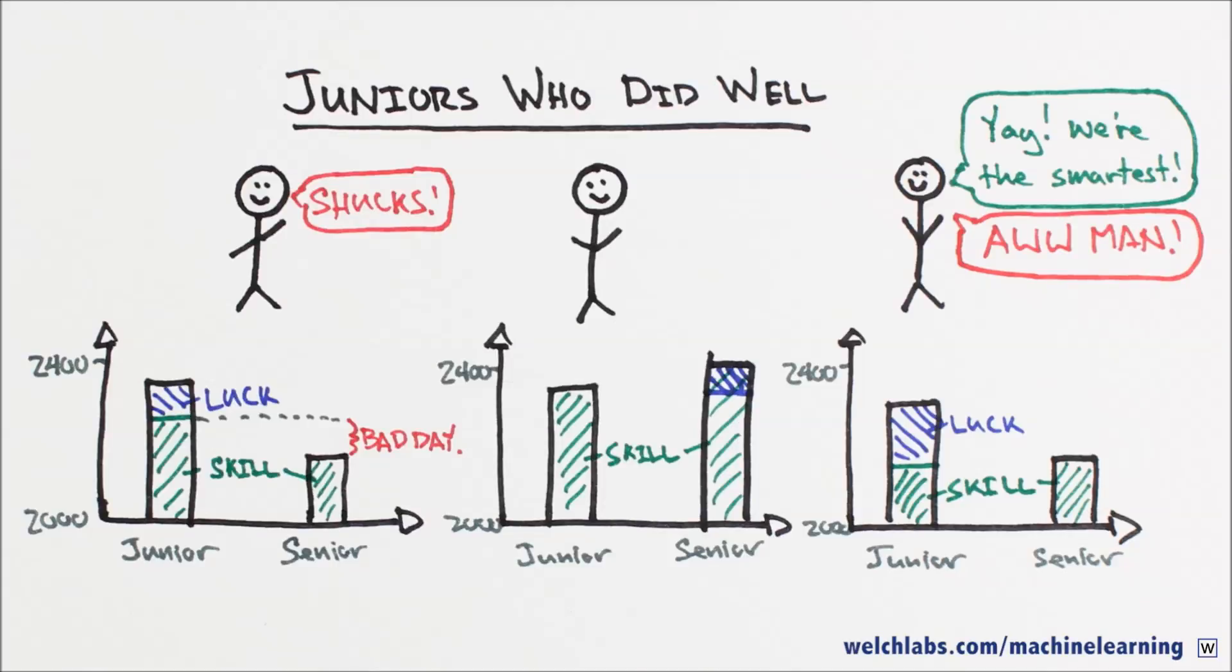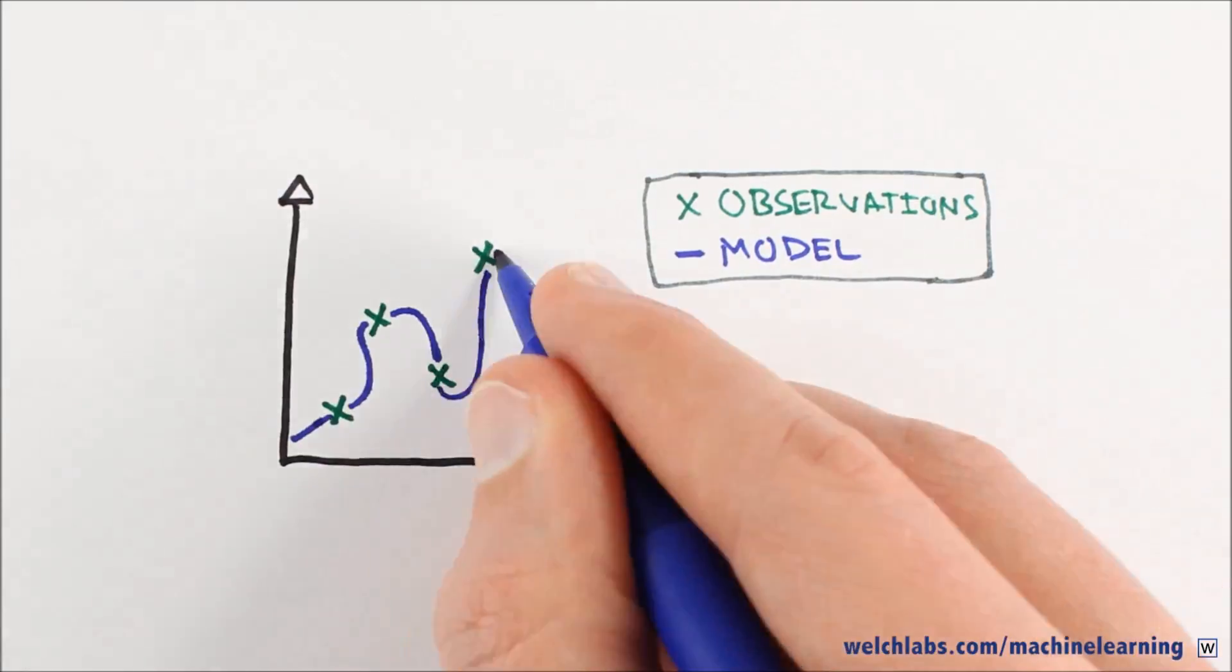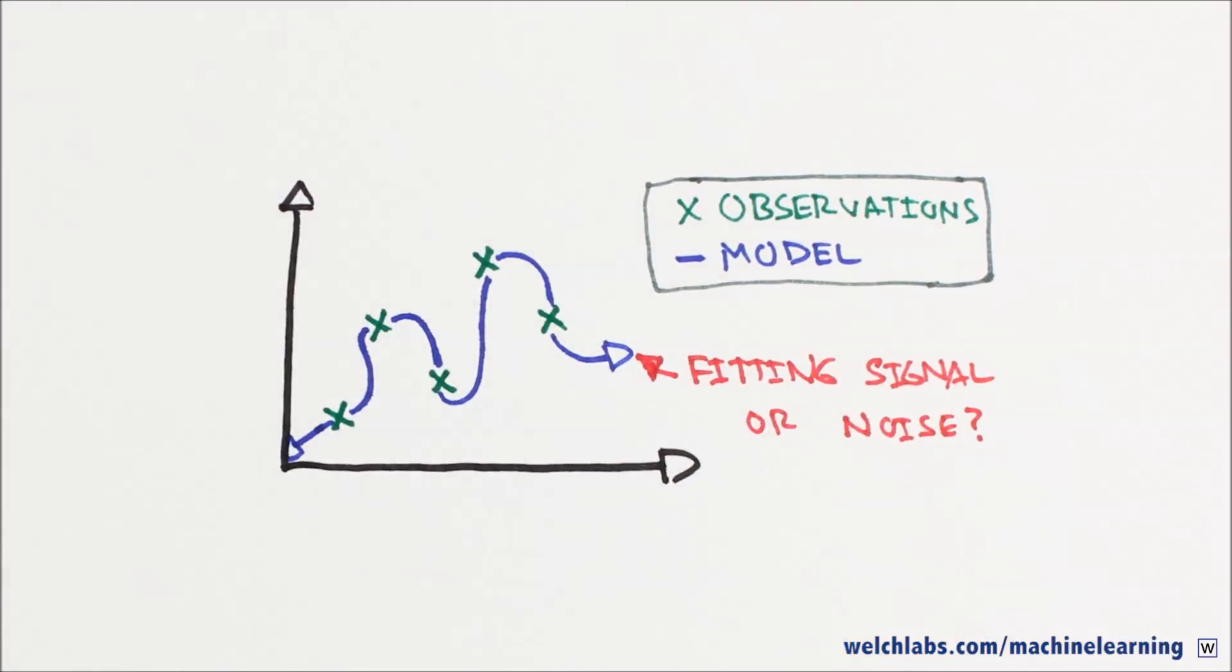So if we can convince our model to fit the signal and not the noise, we should be able to avoid overfitting. First we'll work on diagnosing overfitting, and then we'll work on fixing it.